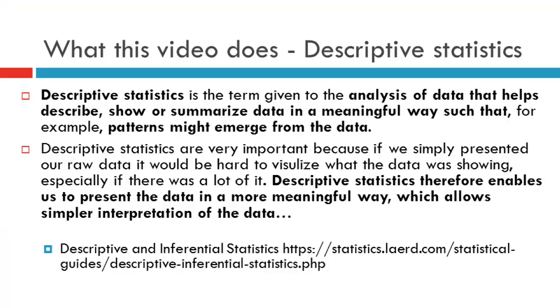The social sciences also use inferential statistics — survey data, experimental data controlling for a difference of means test or looking for statistically significant coefficients. We also have normative analysis, evaluating the extent to which we could do things better. Descriptive statistics are a way to analyze data that help describe, show, or summarize it in a meaningful way such that patterns might emerge from the data.